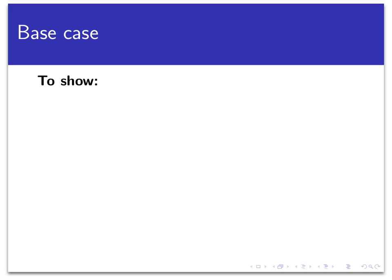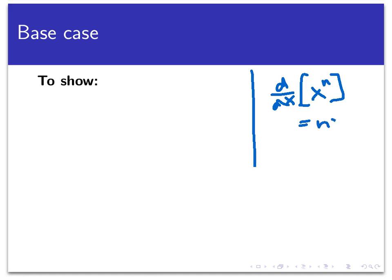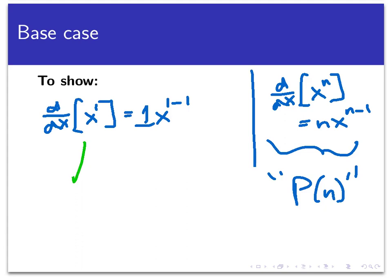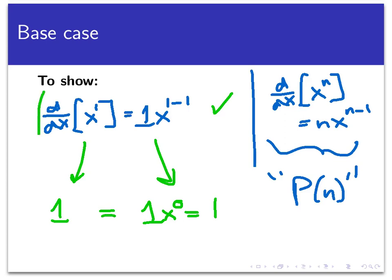Now let's move on to the actual proof of the power rule. In the base case, we want to show that our predicate P(n) — which is that the derivative of x^n equals n·x^(n−1) — holds for n = 1. So we need to show that d/dx[x^1] = 1·x^(1−1). On the left-hand side, based on our assumption, that derivative equals 1. On the right-hand side, we have 1·x^0, which also equals 1. So those two sides are equal and the base case is established.